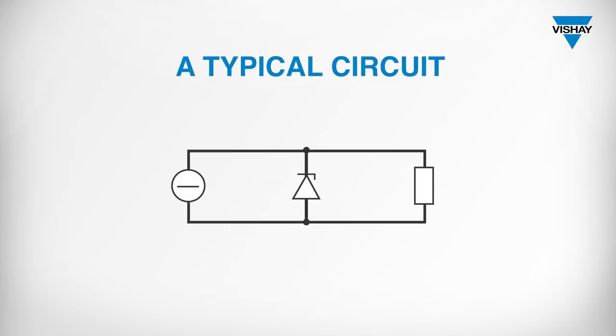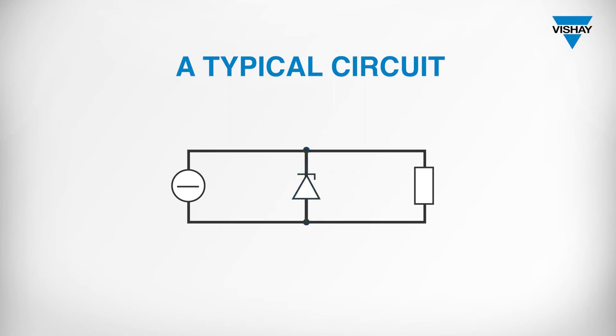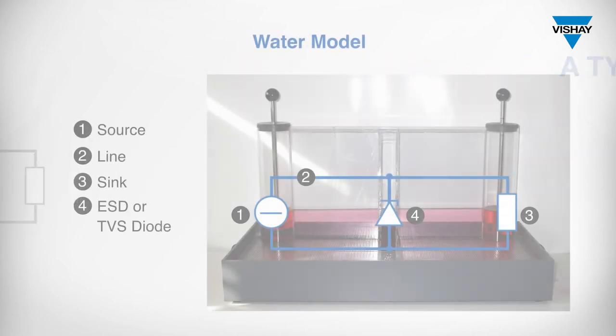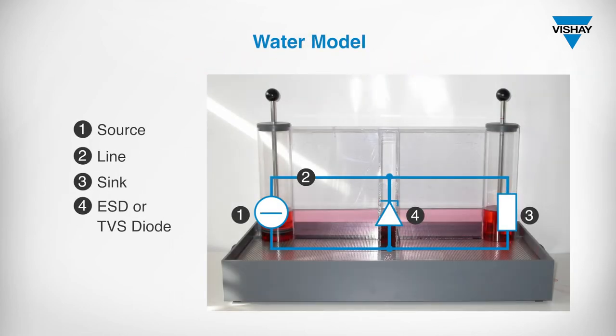A typical electrical circuit consists of a source, a line, a sink (consumer), and a TVS or ESD diode. This circuit will be described by means of a simple water model. In the model, the source represents the left vessel, the cables represent the feeds, the sink represents the right vessel, and the diode is represented in the middle by a certain web width and a corresponding opening height.